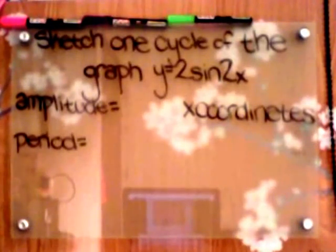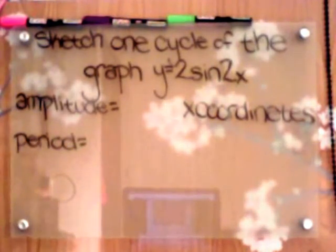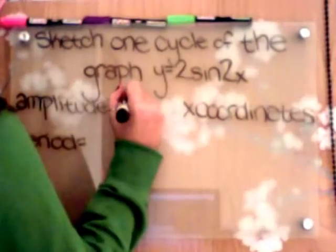To find the amplitude, our amplitude is always going to be the absolute value of the coefficient of sine, which is 2 in our problem.